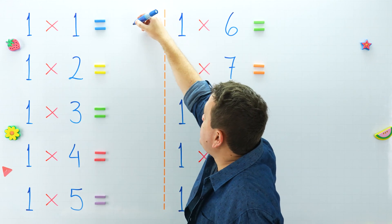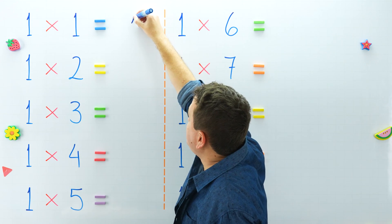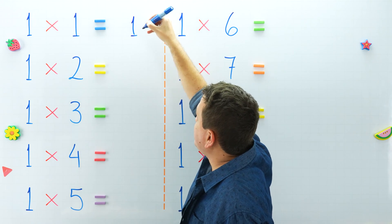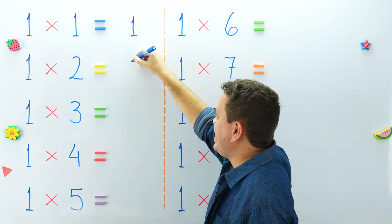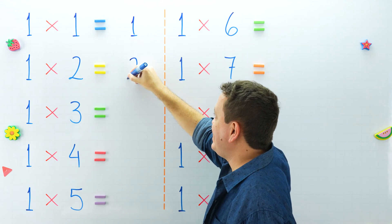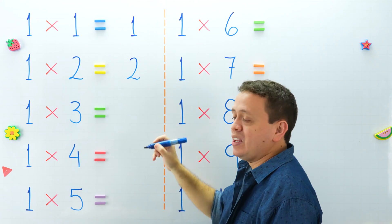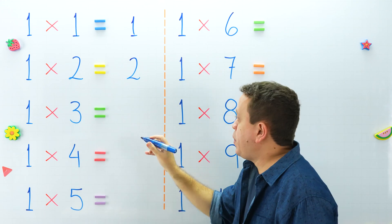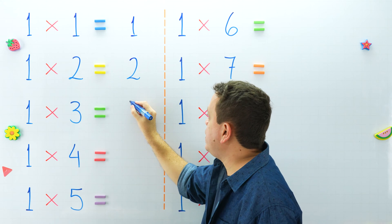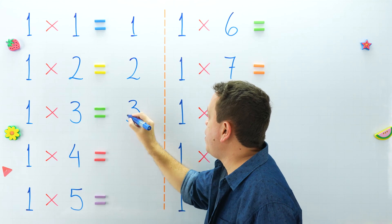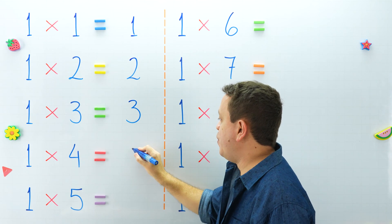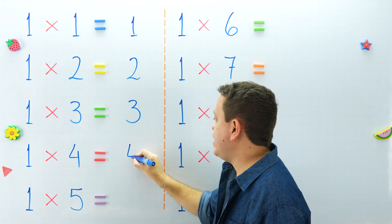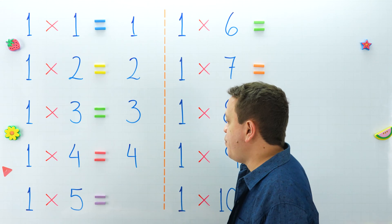1 times 1 equals 1, and 1 times 2 equals 2. 1 times 3 equals 3, and 1 times 4 equals 4.